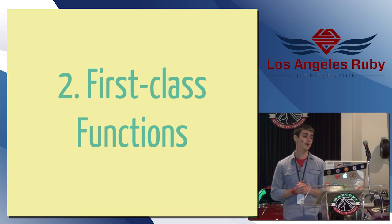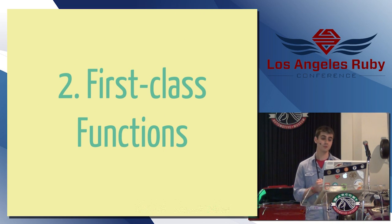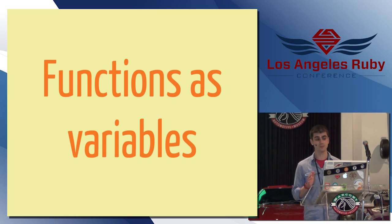A second major difference is Python has first-class functions. This is something that Ruby lacks, and this is a significant distinction. Python has functions as variables, so you can basically pass functions around.